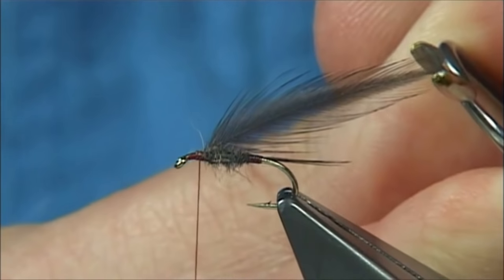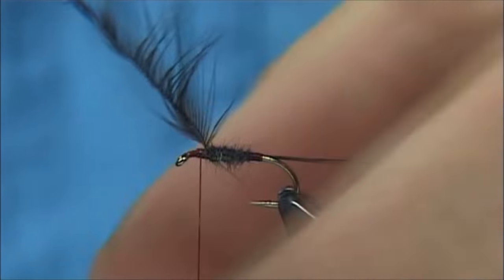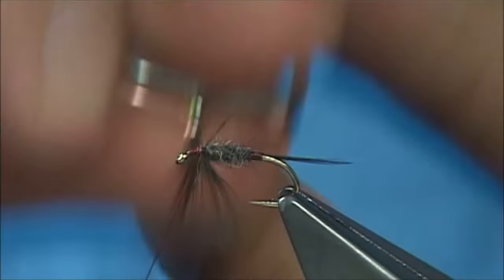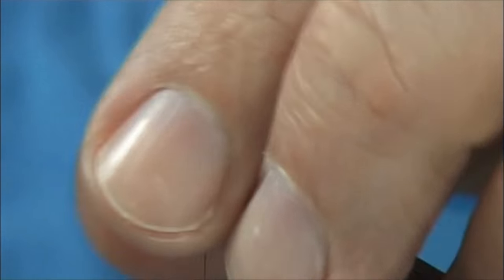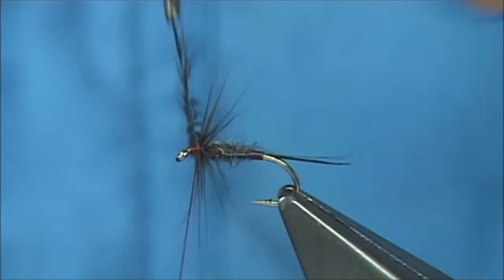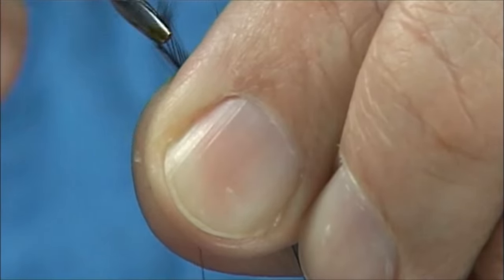Now ready to wind our hackle. Now I have waxed the thread so we've got plenty of grip. Now what I'm going to do here is just fold the hackle and then I want to put probably, the fiber is quite thin on this, at least a couple of turns anyway. Keep a hold of the hackle at this point.